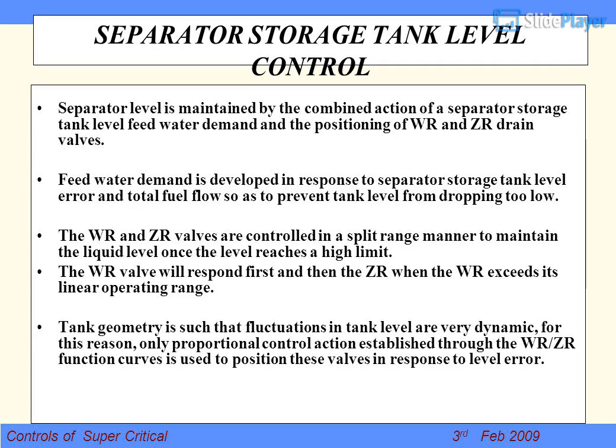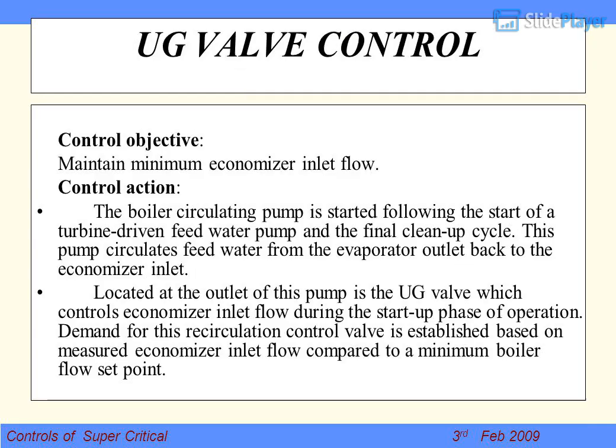Separator Storage Tank Level Control: separator level is maintained by the combined action of separator storage tank level, feed water demand, and the positioning of WR and ZR drain valves. Feed water demand is developed in response to separator storage tank level error and total fuel flow, so as to prevent tank level from dropping too low. The WR and ZR valves are controlled in a split-range manner to maintain liquid level once the level reaches a high limit. The WR valve responds first, then the ZR when WR exceeds its linear operating range. Tank geometry is such that fluctuations in tank level are very dynamic; only proportional control action through the WR/ZR function curves is used to position these valves in response to level error. SP level is maintained, and feed water demand is trimmed by separator level.